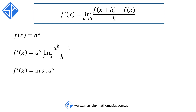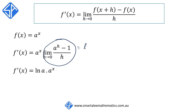Going back and combining everything together: we started with f(x) equal to a to the power of x. f'(x) was derived to be a to the x times the limit as h approaches 0 of (a to the h minus 1) over h. We've just proven that this limit equals log(a). Therefore, putting this all together, we get the result: f'(x) equals log(a) times a to the power of x.